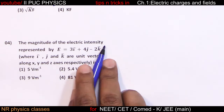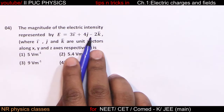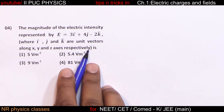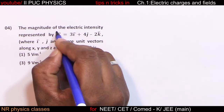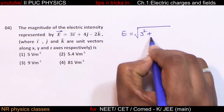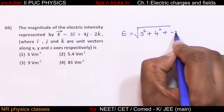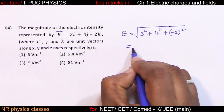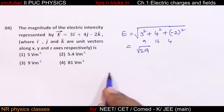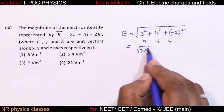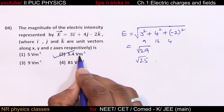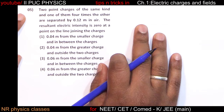The magnitude of the electric intensity represented by 3i plus 4j minus 2k, where i, j, k are unit vectors along X, Y, Z axes respectively. Since it is a vector, the magnitude is root of (3 squared plus 4 squared plus 2 squared), which equals root of (9 + 16 + 4) = root 29, approximately 5.4 volt per meter.